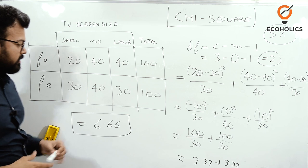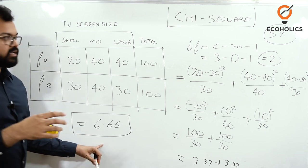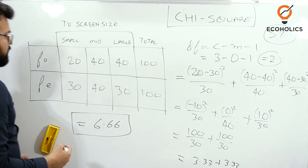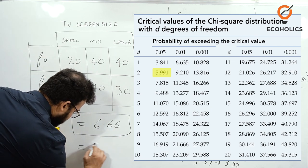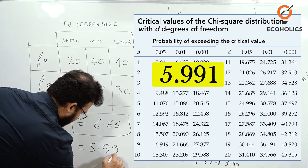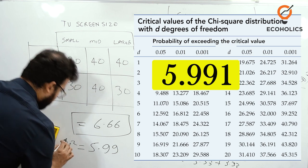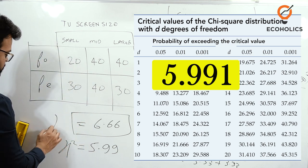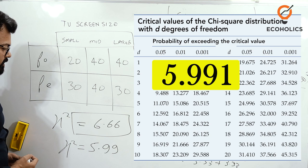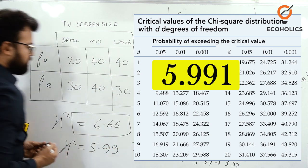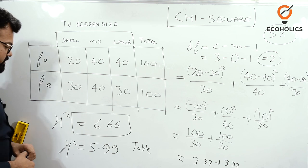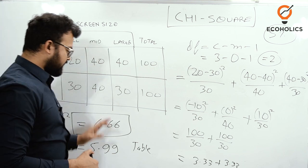At the degrees of freedom of 2, you get this value. We'll see the chi-square table value. After seeing the table, the table value comes out as 5.99. This is the calculated value on top and the table value is at bottom.